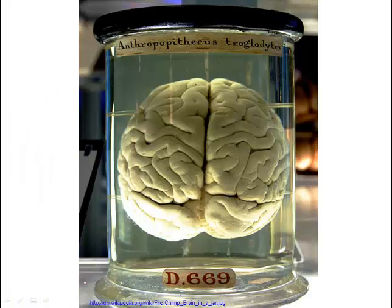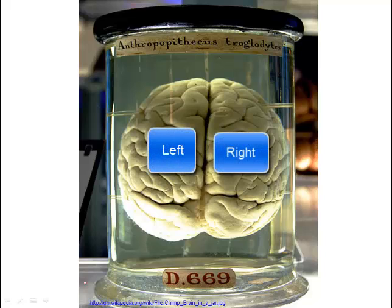The cerebrum makes up 80% of the brain mass in humans. It's responsible for higher brain functions: the ability to learn, the ability to remember, self-awareness, consciousness, and intelligence. There are two cerebral hemispheres — the left and the right side.